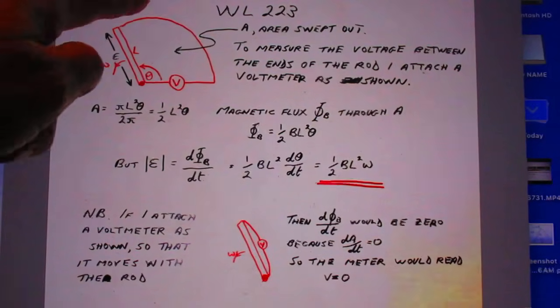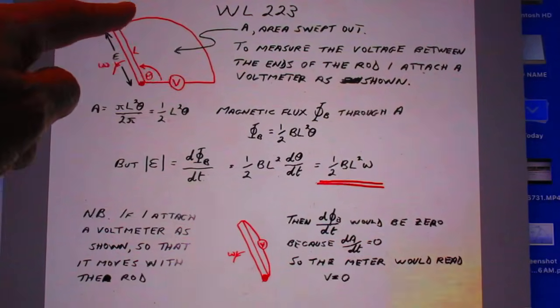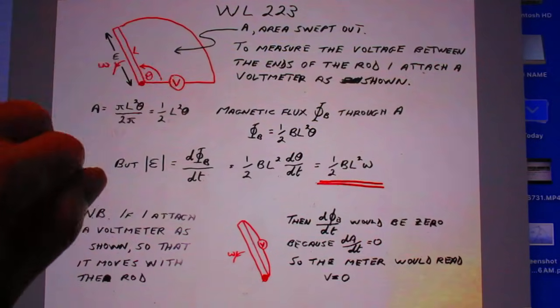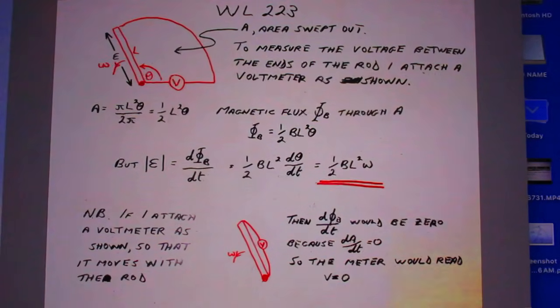He calculates the area, this area here, high school math, one half L square theta. And then he calculates the magnetic flux through that area. Piece of cake. Multiply the area by the magnetic field B.